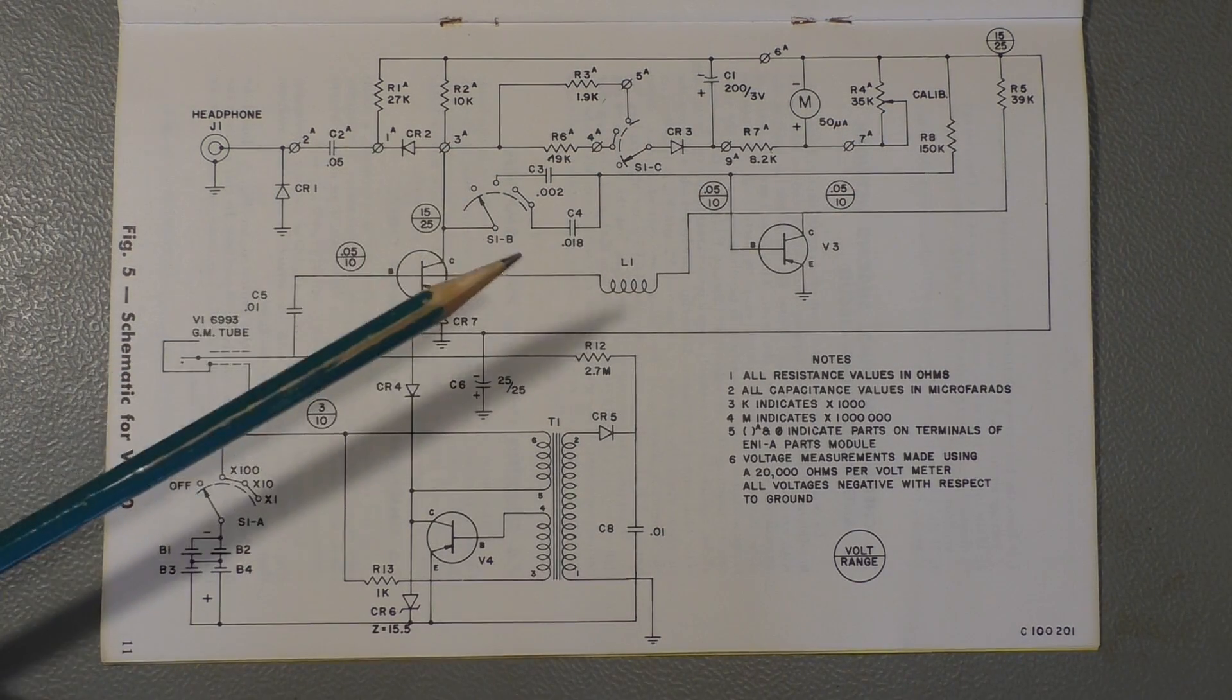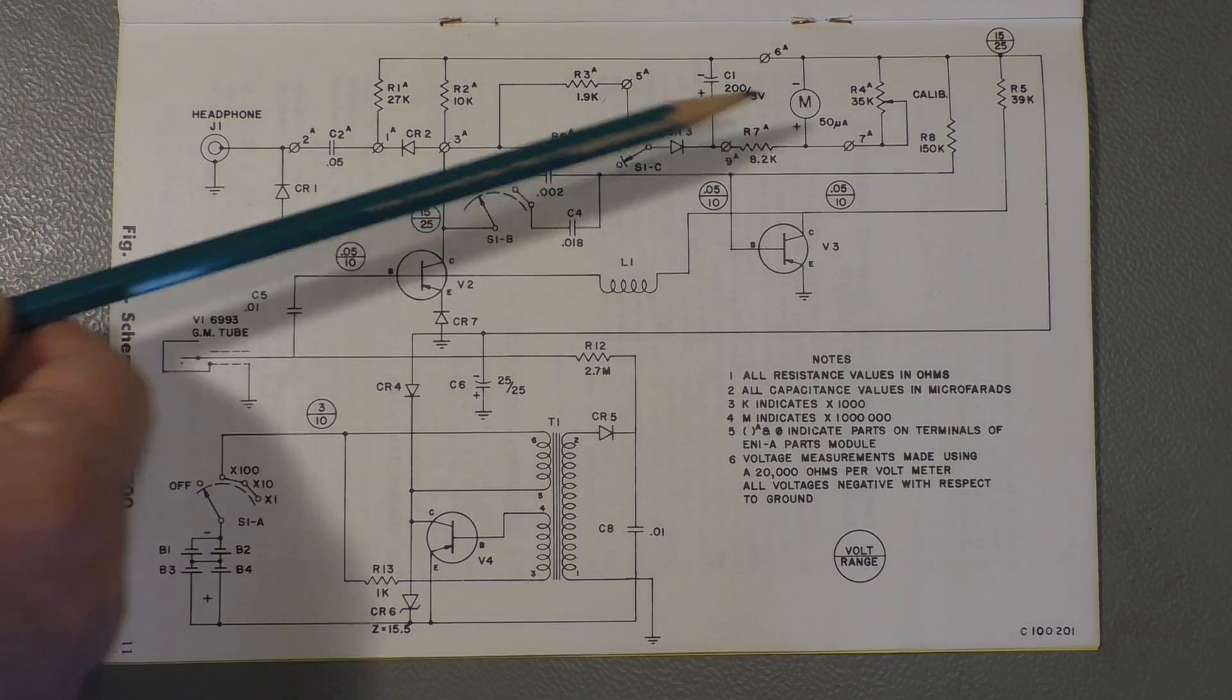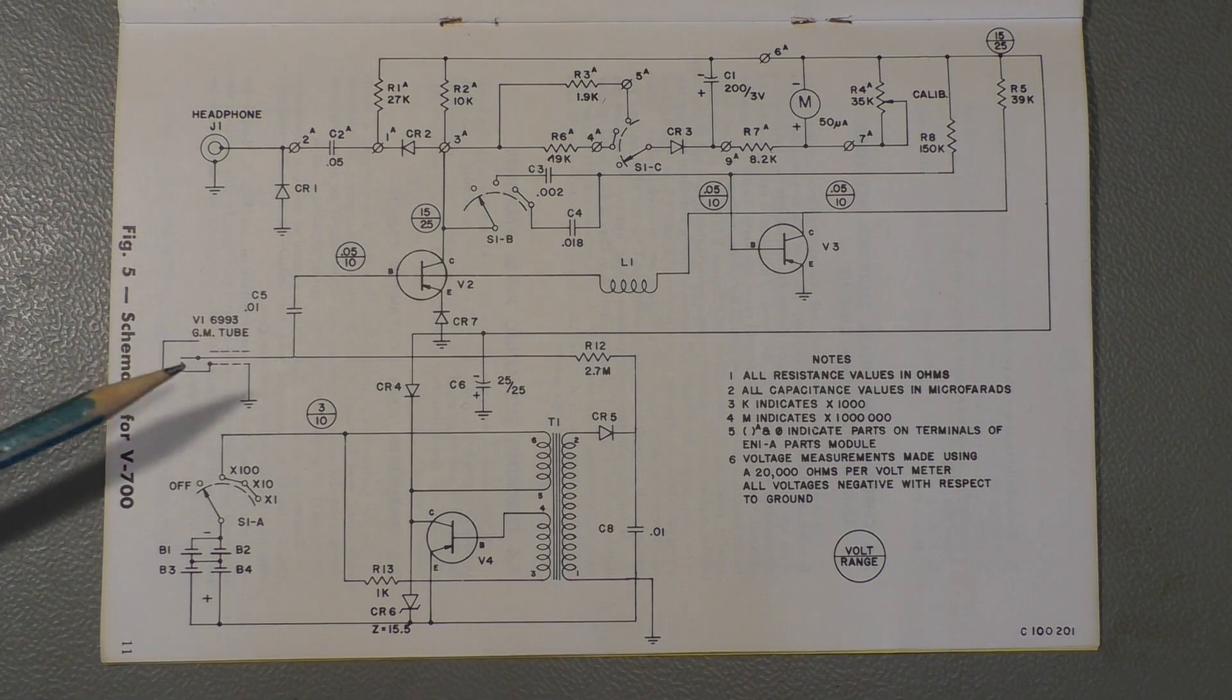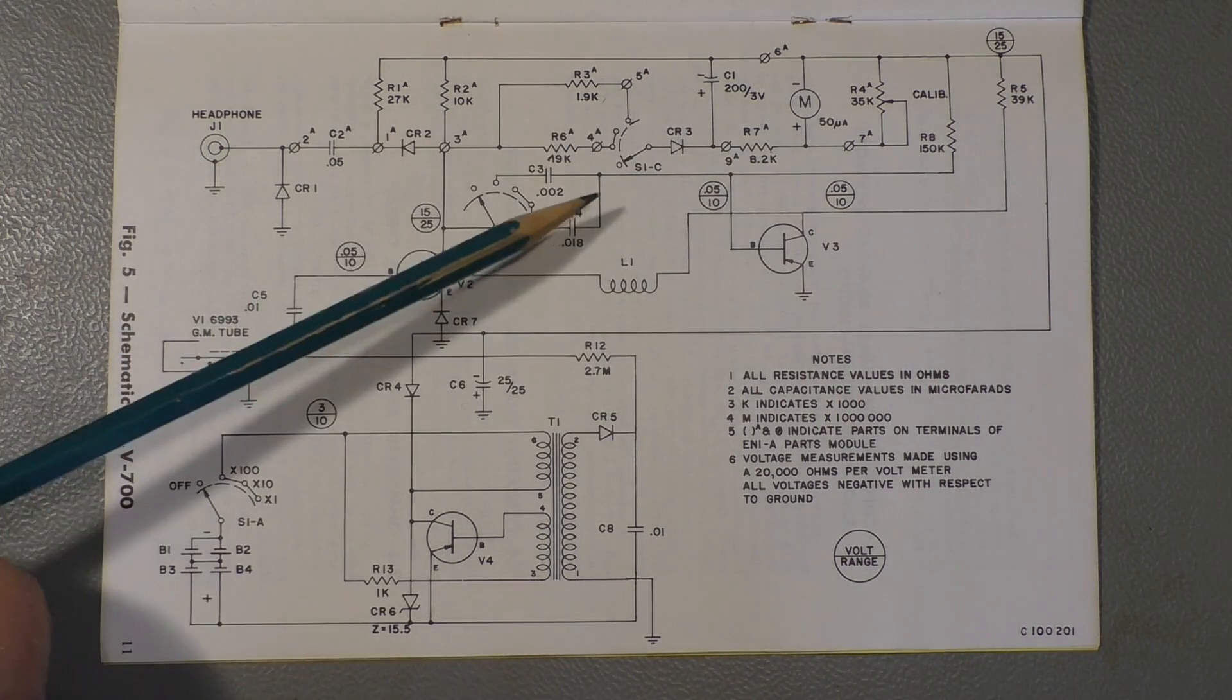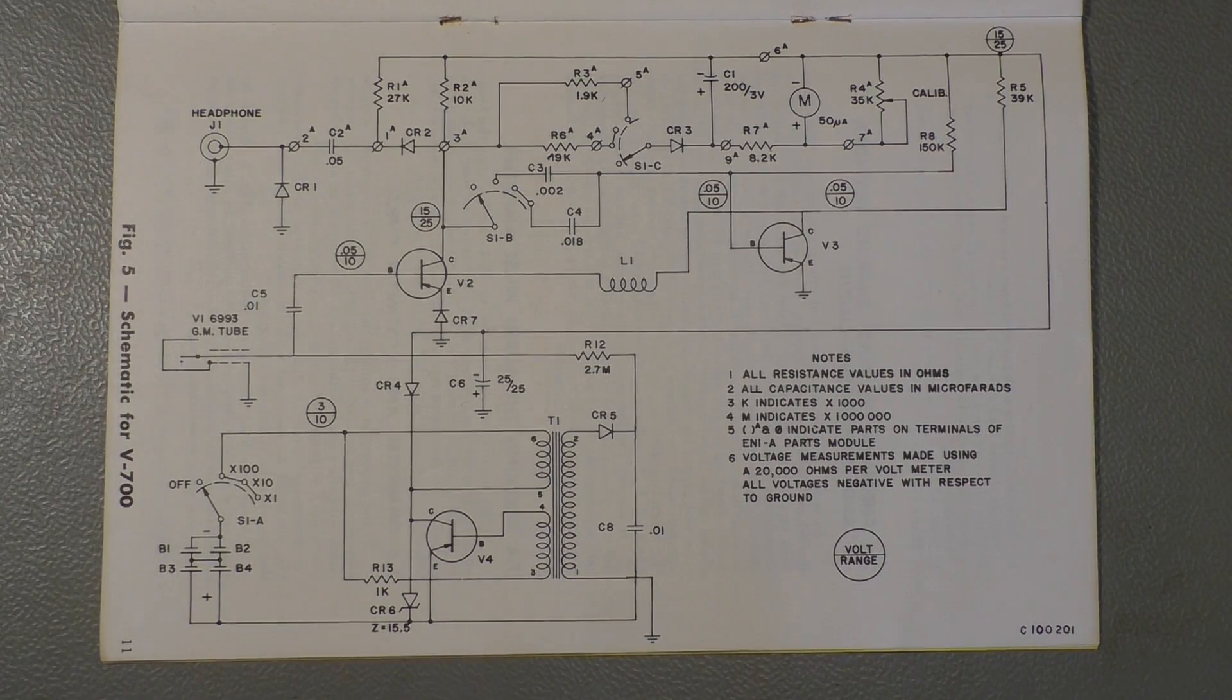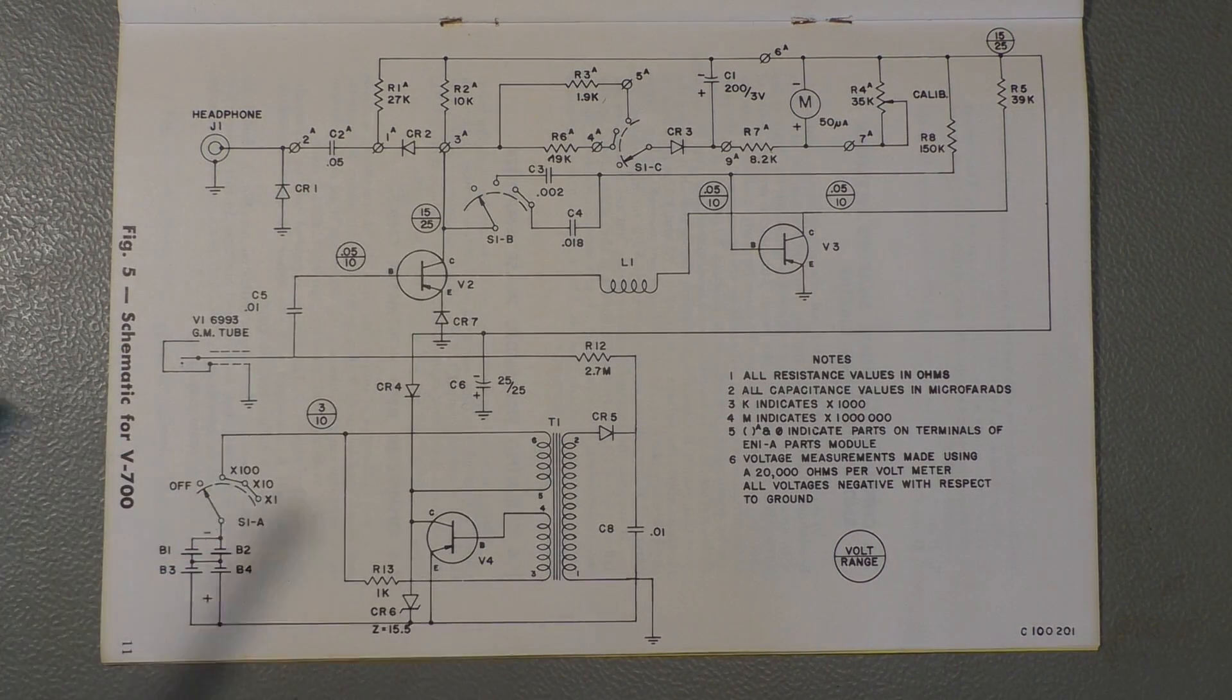And that means for every particle that comes here, makes an impulse, a bigger or a smaller impulse, it doesn't matter, it triggers this monoflop circuit for a short time. And, of course, the more impulses they come, the more impulses will be generated here until there are so many that they are so close together, that they almost touch each other. And then you have to switch from the X1 to the X10 or X100 range.